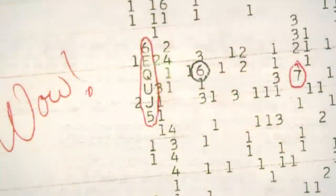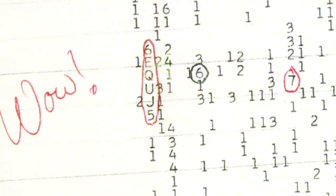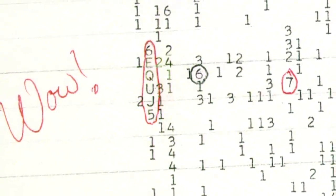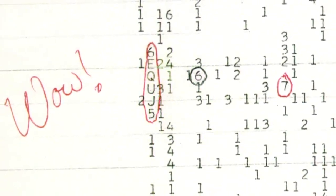Astronomer Jerry R. Eman discovered the anomaly a few days later while reviewing the recorded data. He was so impressed by the result that he circled the reading on the computer's printout and wrote the comment, WOW, on its side, which is how the event has since been referred to.